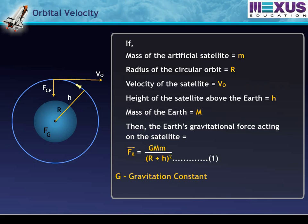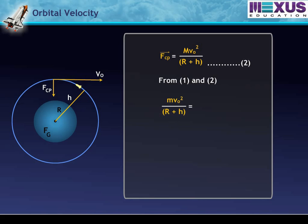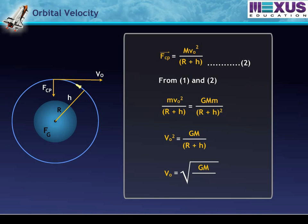Here G is the universal gravitational constant, equal to 6.672 × 10⁻¹¹ N·m²/kg². The centripetal force FCP required for circular motion of the satellite can be expressed as m times VO squared upon (R plus H) — equation 2. From equations 1 and 2, m times VO squared upon (R plus H) equals G times M times m upon (R plus H) squared. So VO squared equals G times M upon (R plus H), or VO equals the square root of G times M upon (R plus H).